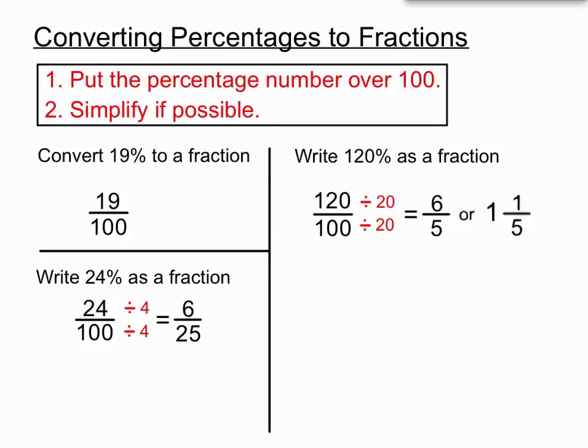Now if we wanted to, we could also convert that to a mixed numeral: 1 and 1/5. But they asked for a fraction, so 6 over 5 is the better answer.